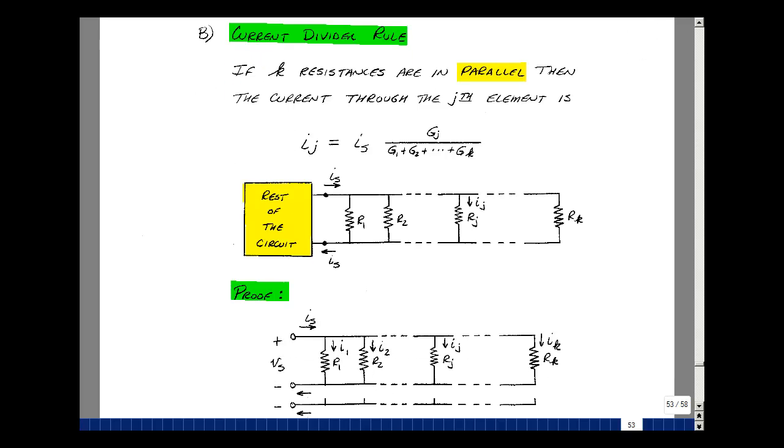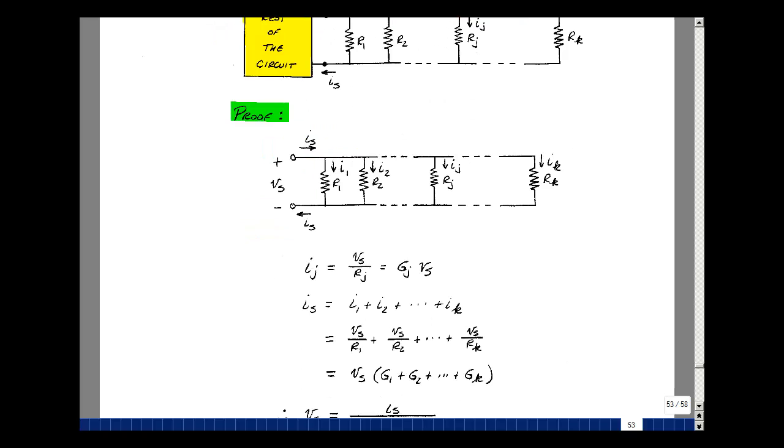Now, why would this be true? Let's assume that the box produces a voltage V sub S, and current is going to have to come out of the plus terminal and eventually go back to the minus terminal. That's because this can only absorb power. Let's assign a current to R1 through R sub K. The current in this element is going to be the voltage across it divided by the resistance. That's V sub S divided by R sub J, or G sub J times V of S.